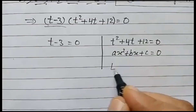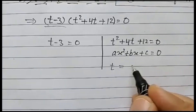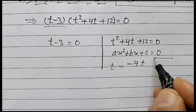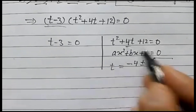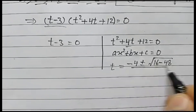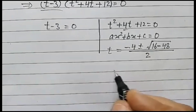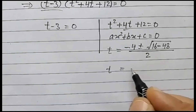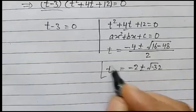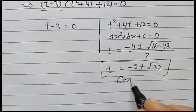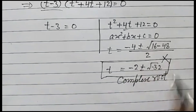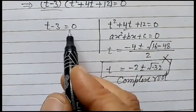Using the quadratic formula for t squared plus 4t plus 12 equals 0: t equals minus b plus or minus square root of b squared minus 4ac, over 2a. So t equals minus 2 plus or minus square root of minus 32. This gives a complex root, so we reject this solution.